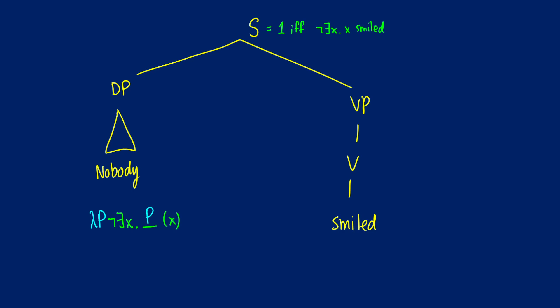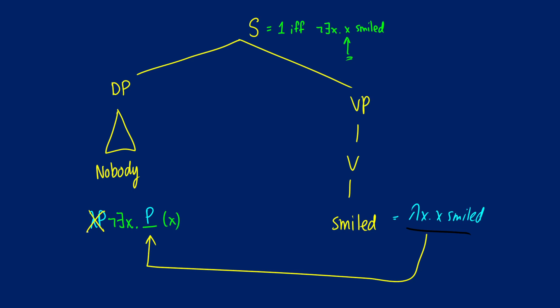If we take 'smiled' — lambda X dot X smiled — and do the application, we end up with our final result at the top. It works exactly the same way as before: we substitute lambda X dot X smiled into the P position, get rid of the lambda out front, and distribute X inside so it's bound by the quantifier. That was quantifiers as pronominal-like objects — they're acting as pronouns. We'll look at quantifiers as determiners next time.